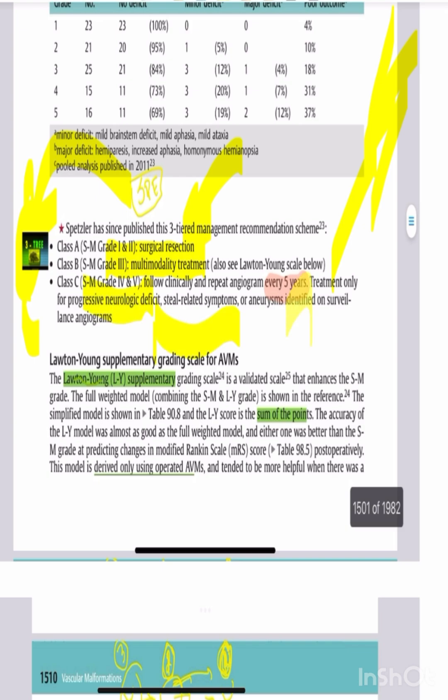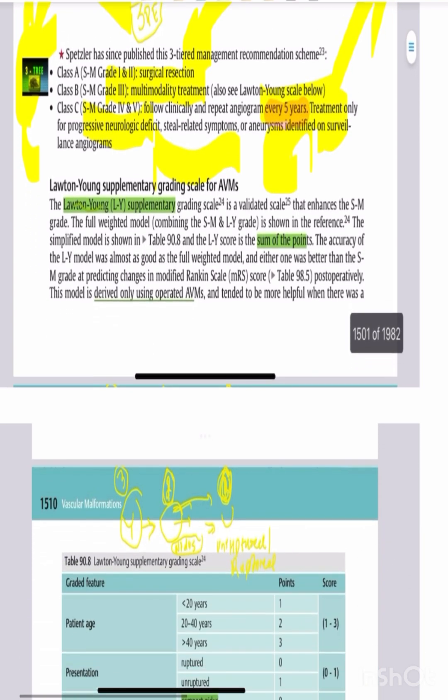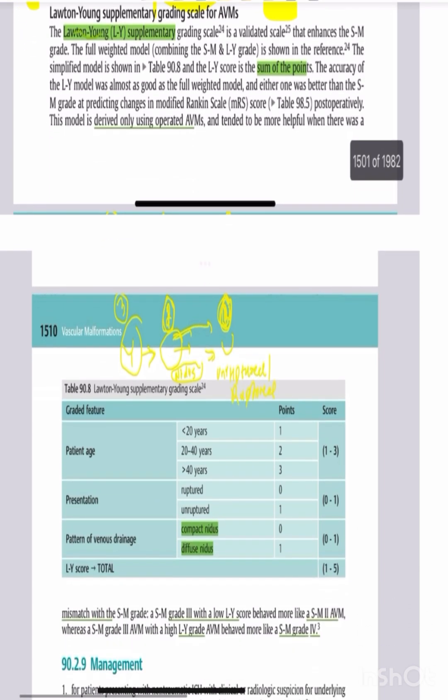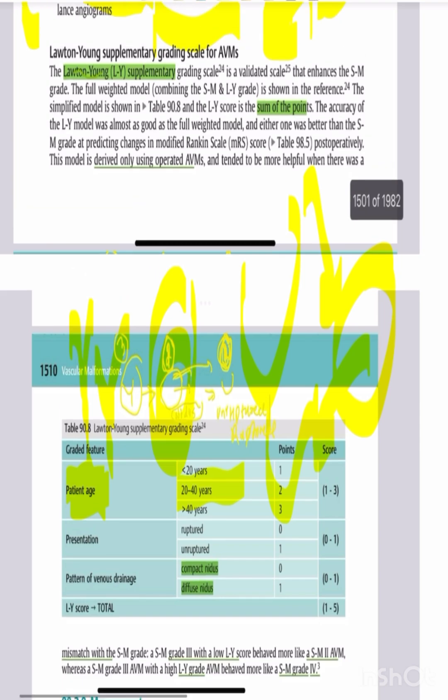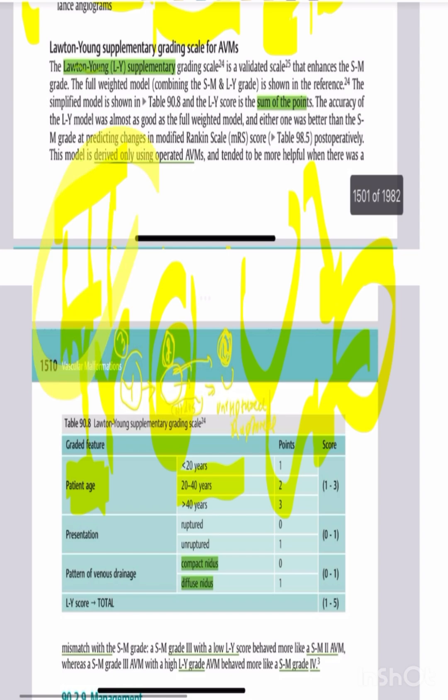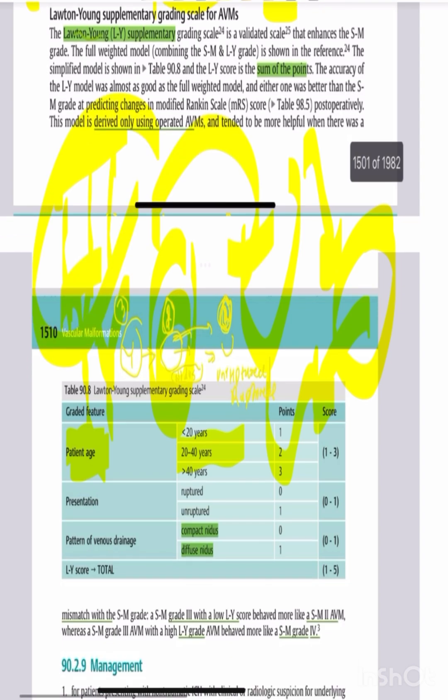The Lawton-Young supplementary grading scale adds patient age, whether the AVM is ruptured or unruptured, and compact versus diffuse nidus. This combines with the Spetzler-Martin grade. For example, a Spetzler-Martin grade 3 with additional risk factors gives a higher overall Lawton-Young score, indicating lower surgical success rates for grade 4-5 lesions.